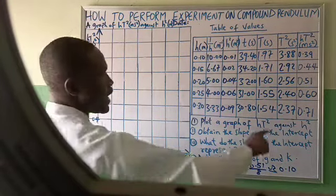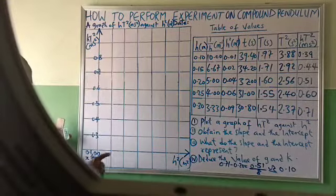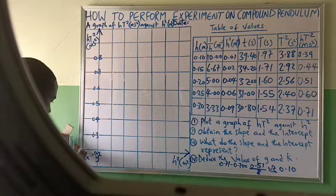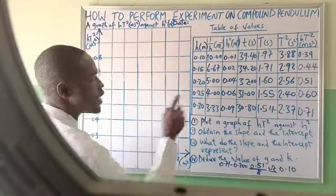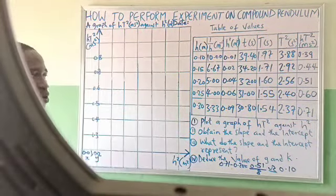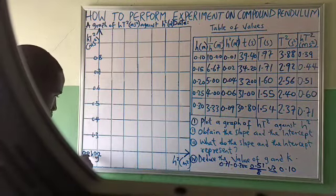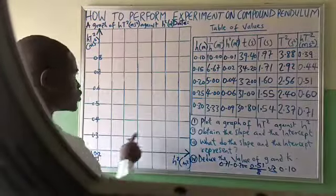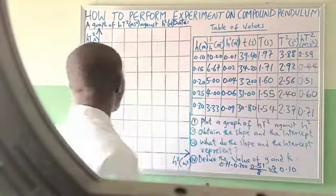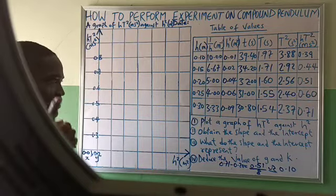For the horizontal axis, H squared has a highest value of 0.09. We cannot start from 0.1 because 0.1 is greater than 0.09. So I decide to start from 0.01, because it is close to the lowest value. I choose a starting point close to the lowest value so that when you add subsequent values, it will cover at least two-thirds of the graph. That is the idea.